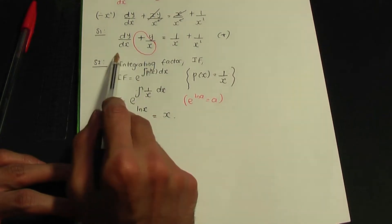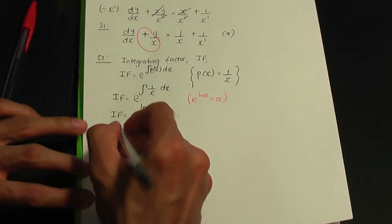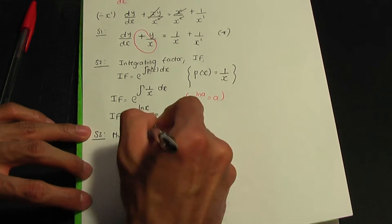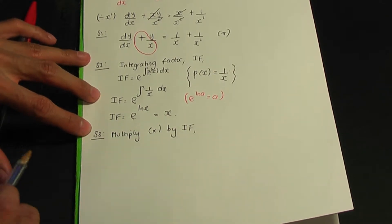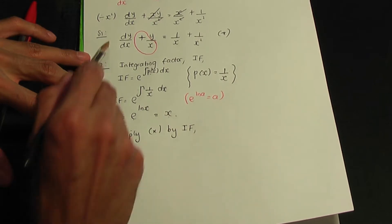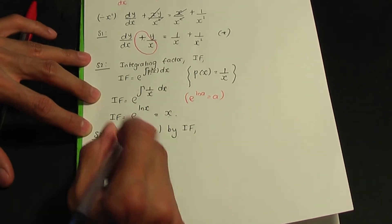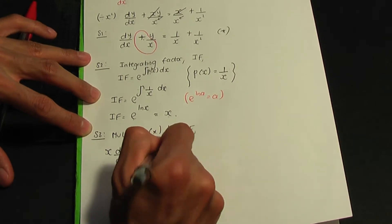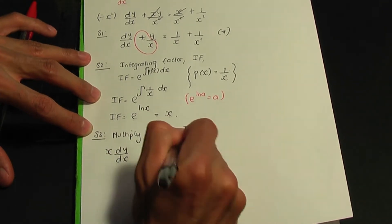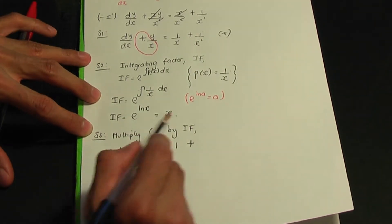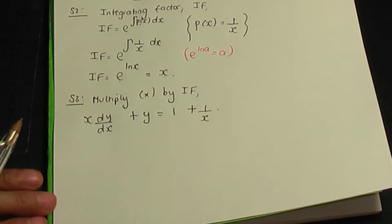Going back to the paper and pen, here is our equation star in standard form. Let's multiply throughout by the integrating factor, which is x. So x times dy over dx gives x dy/dx, plus y over x times x gives y, and that equals 1 over x times x which is 1, plus 1 over x squared times x which is 1 over x. That completes step number three.